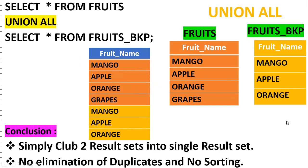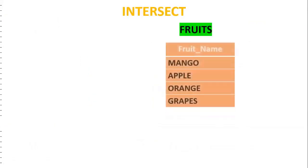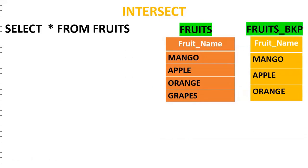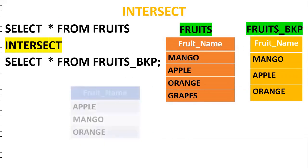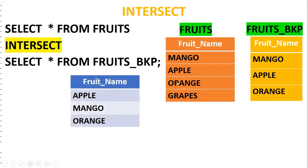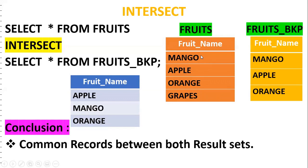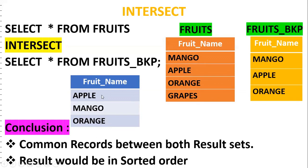Now we have intersect. Fruits table and fruits_backup table - four and three records. Select * from fruits INTERSECT select * from fruits_backup. Intersect gives the common records between two result sets. Apple is in both, mango is in both, orange is in both - so they are picked. Grapes is not in fruits_backup, so it won't appear. The result is apple, mango, orange - common records between both results. One more thing: the result will be in sorted order.